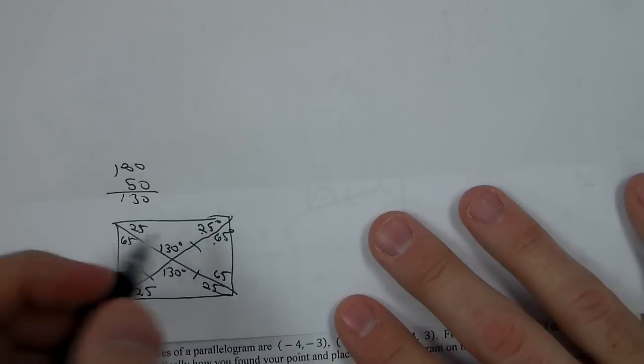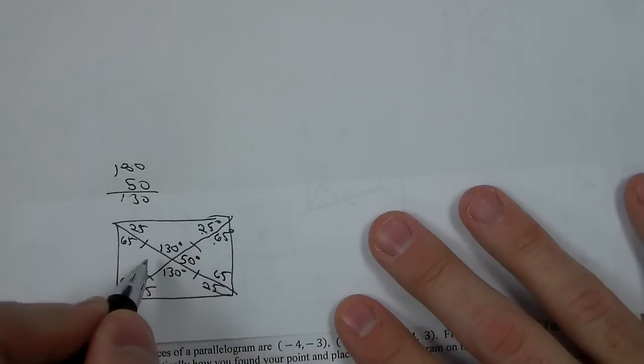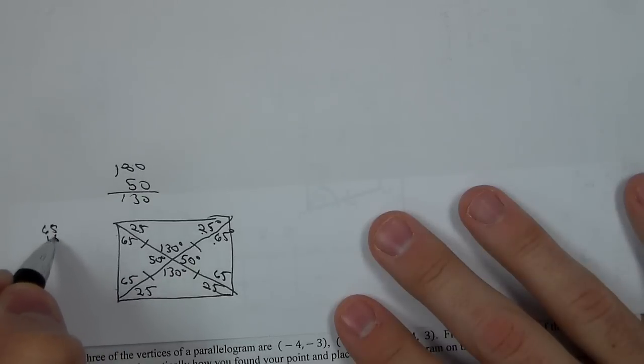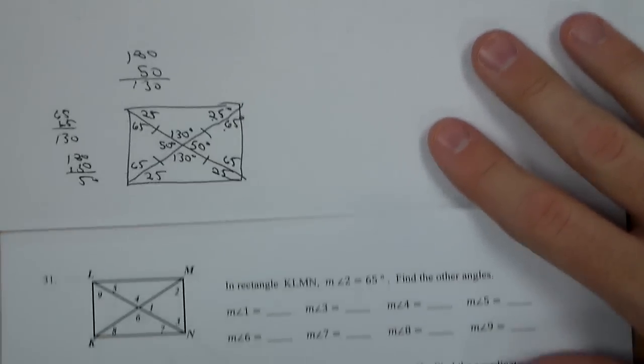Or 65 and 65 is 130, which 180 minus 130 is 50 degrees. So now I have them all filled in.